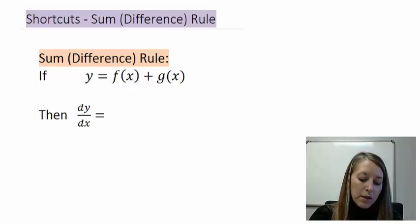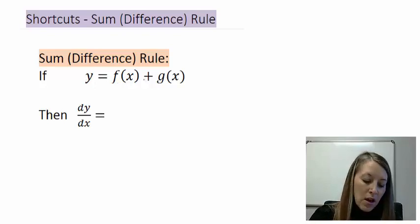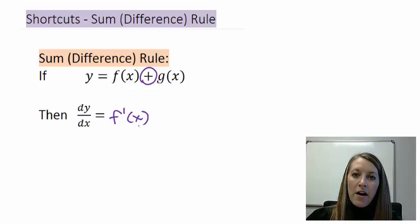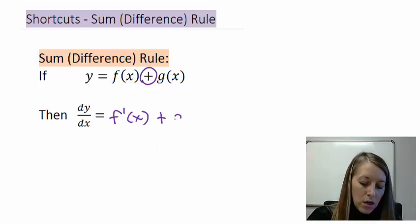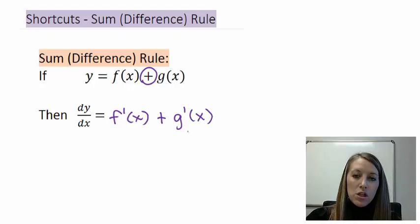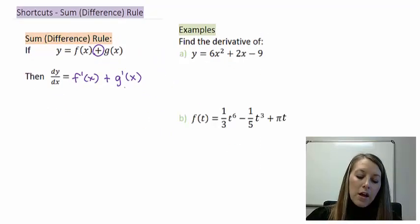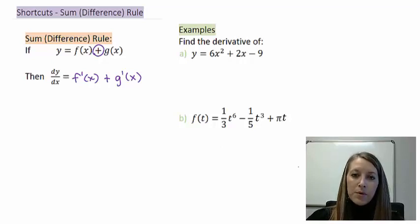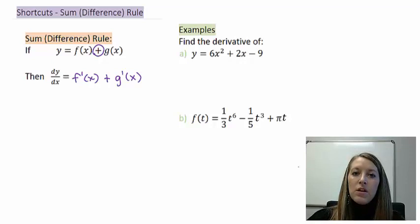If y equals f of x plus g of x, we can take the derivative of the first piece, f prime of x, and add it to the derivative of the second piece, g prime of x. These examples combine all four differentiation techniques we've learned. Pause the video and see what you come up with.